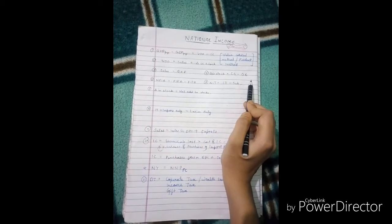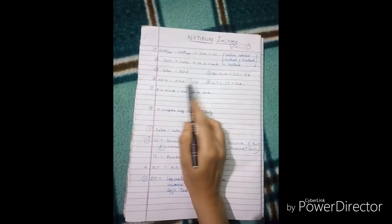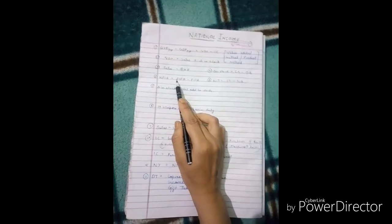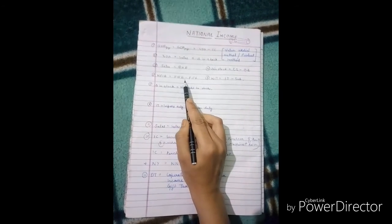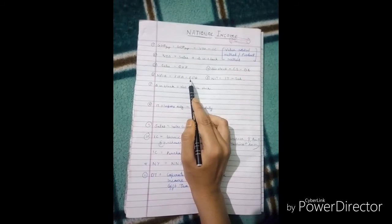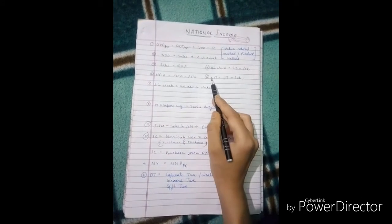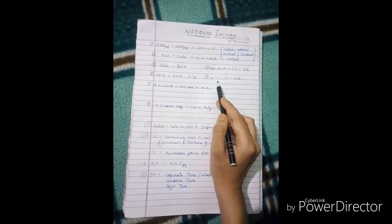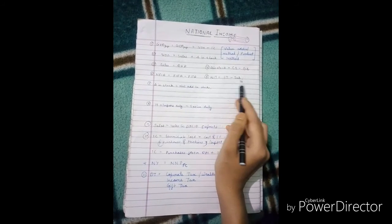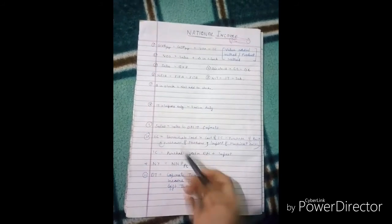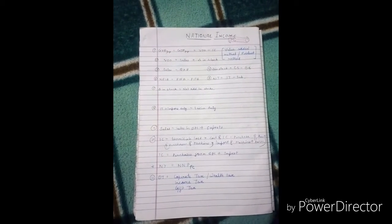NFIA formula is FIFA minus FITA, where FIFA is Factor Income from Abroad and FITA is Factor Income to Abroad. NIT, which is Net Indirect Taxes, equals Indirect Taxes minus Subsidies. Now there are different names in both papers. Direct name may not come in the paper.